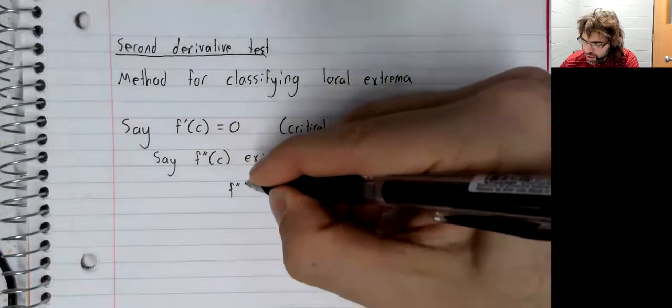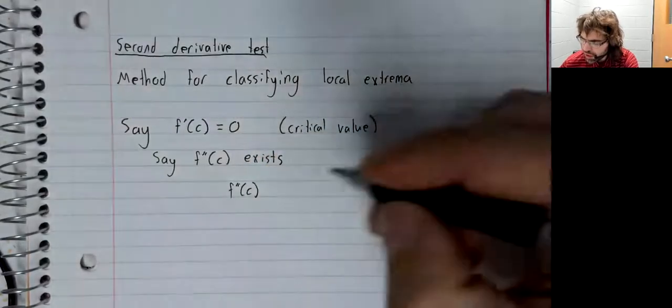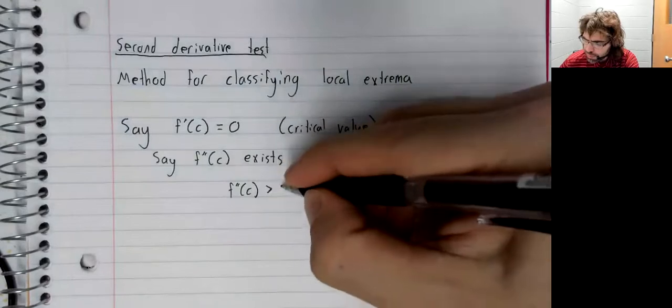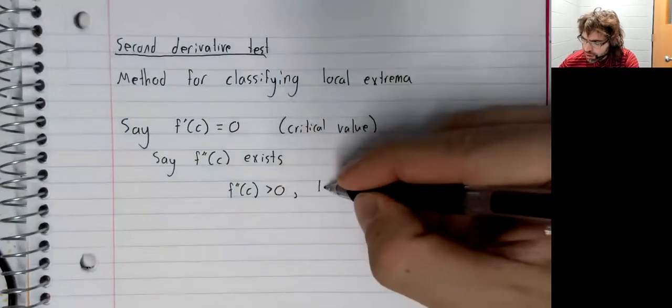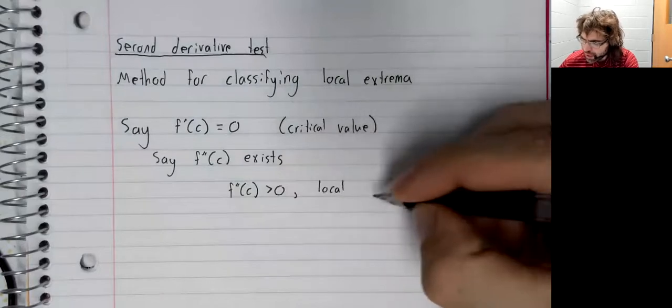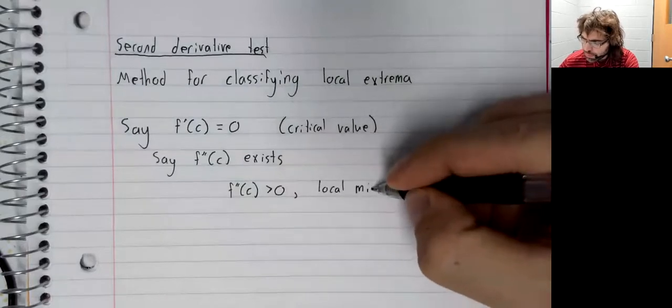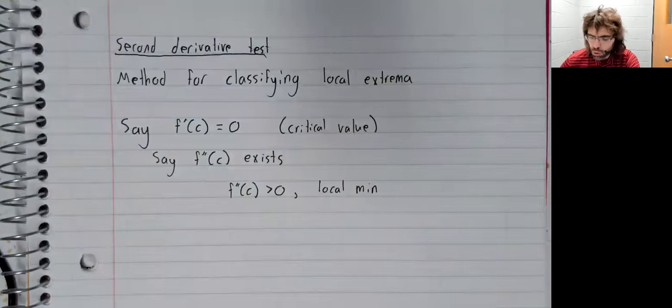Then if the second derivative is positive, this critical value is a local min.